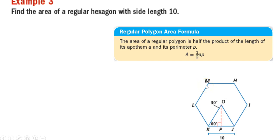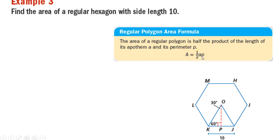To do that, we have to know the regular polygon area formula, which says the area of a regular polygon is half the product of the length of its apothem, which we call A, and its perimeter P. So the area of a regular polygon equals one half times the apothem times the perimeter of that figure.